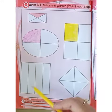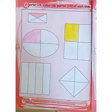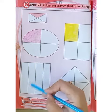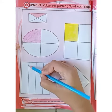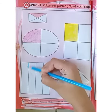Move on to the next one. This is a square shape and we also have to color the quarter of this shape. Color it. Color it very carefully.